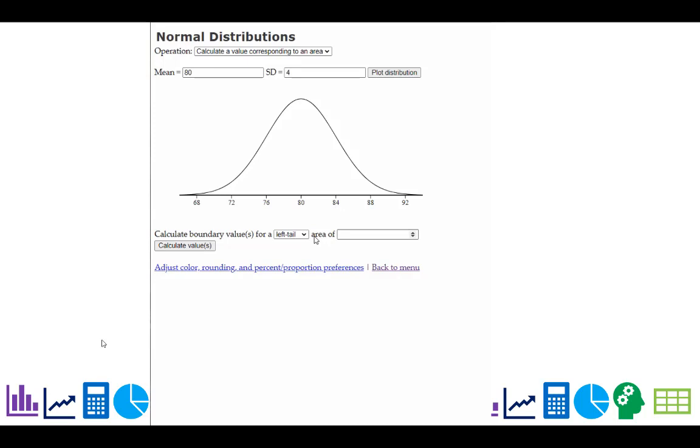And I want to say the lightest 5% of boxes. So is that on the left or the right? Well, I know the area is 0.05. If I hit calculate value, that shows that would be the lightest.